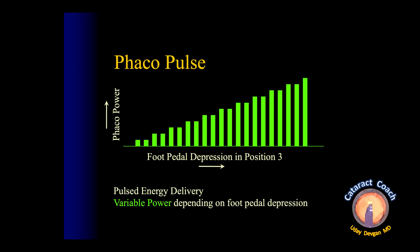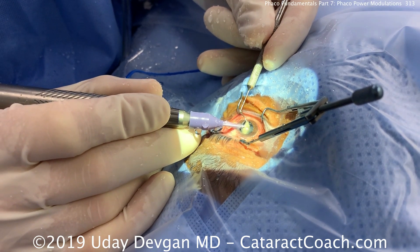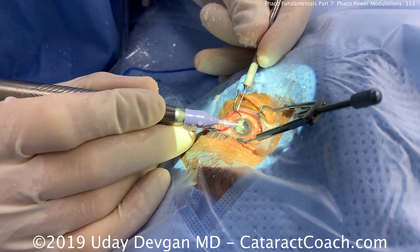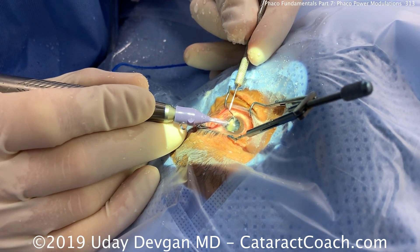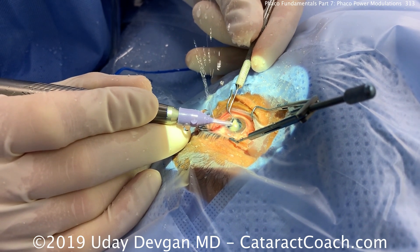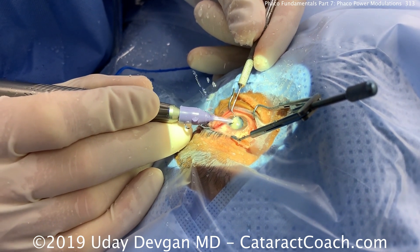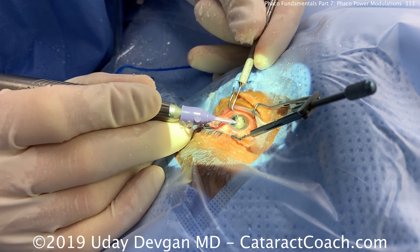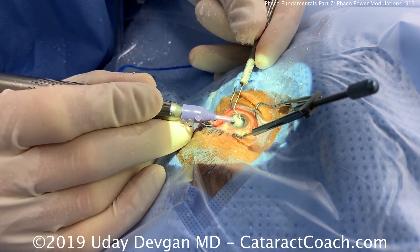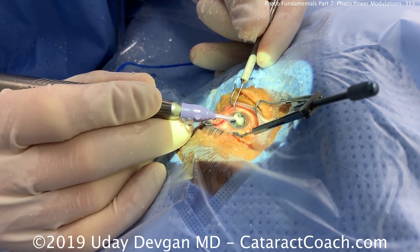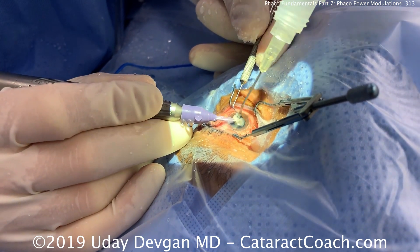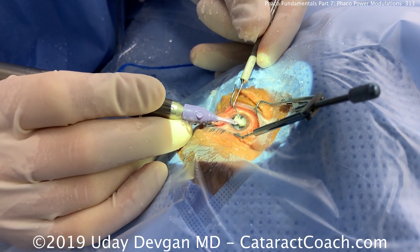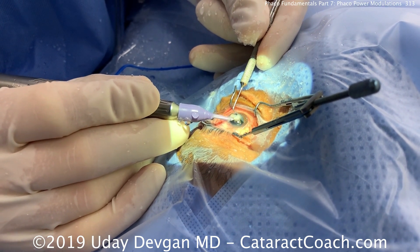Pulse mode works on the same concept — stepping deeper on the pedal delivers more energy — but the power is delivered in discrete pulses with rest periods between them. This allows cooling of the phaco tip. You can have a very wide range of pulse rates, from just a few pulses per second up to a hundred or more per second. Interspacing energy with cooling prevents heat buildup on the tip and can also increase followability of nuclear pieces.